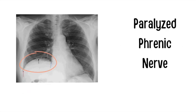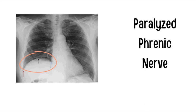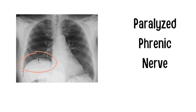Looking at this image, you can see the hemidiaphragm is elevated. One cause of an elevated hemidiaphragm is a paralyzed phrenic nerve, which can occur due to a Pancoast tumor. Recall that C5 keeps the diaphragm alive and can be affected by a Pancoast tumor. Horner syndrome occurs when C8 to T1 is affected.